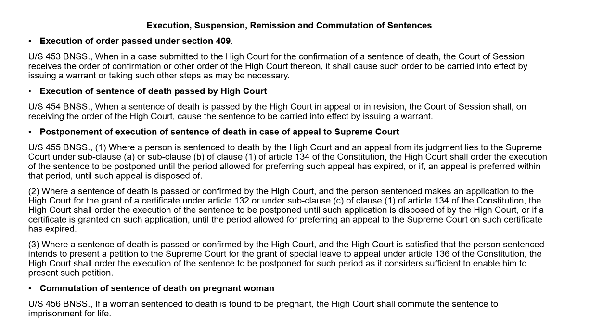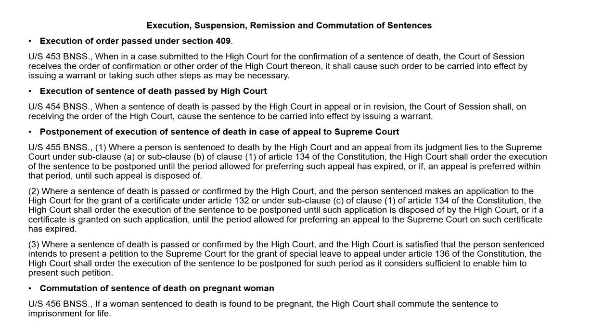There are many checks in place before a person is executed, because life once lost cannot be recovered. A person must exhaust all possible remedies — including a mercy petition — before death penalty can be executed. An important provision addresses death penalty awarded to a pregnant woman. The crime may have been committed by her, but the innocent life growing inside her has a right to be born alive. Section 456 of the BNSS provides that if a woman sentenced to death is found to be pregnant, the High Court shall commute the sentence to imprisonment for life.